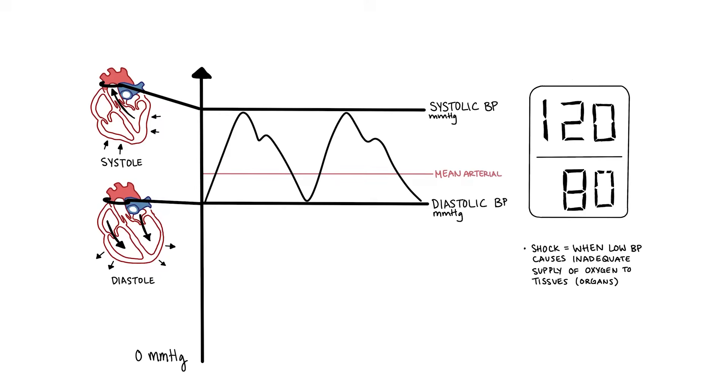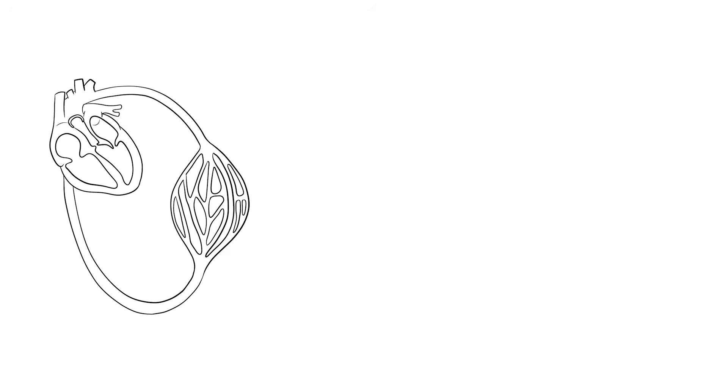The mean arterial pressure, or MAP, is a good indicator of tissue perfusion rather than the systolic blood pressure. The mean arterial pressure is the average arterial pressure throughout one cardiac cycle. The two major determinants of mean arterial pressure are cardiac output and peripheral resistance. The relationship between mean arterial pressure and its determinants is given by the following equation, where mean arterial pressure is equal to cardiac output times total peripheral resistance. It is important to note that the equation only represents the relationship between the mean arterial pressure and its determinants.